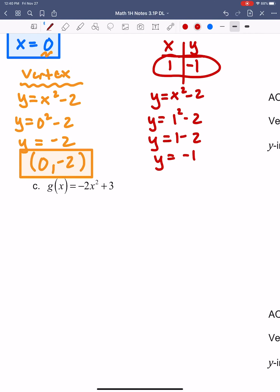First thing I'm going to do is identify A, B, and C. So I've got A is negative 2, no B value again, and C is positive 3.